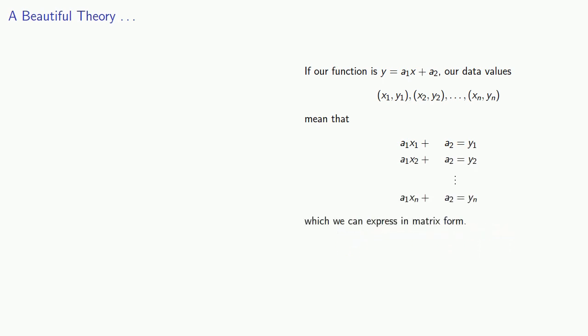And we can express this in matrix form. Now here, remember the unknowns are the a1s and the a2s. And so in matrix form, we want to find a1, a2, where Ax equals b, where A is our coefficient matrix, x is our column of variables, and b is our column of constants.